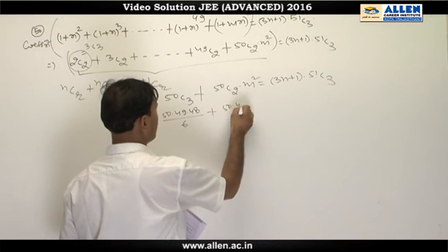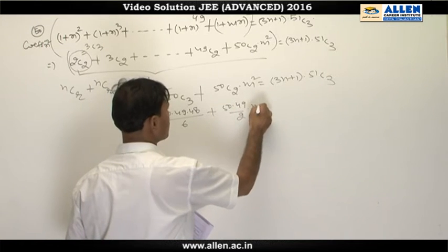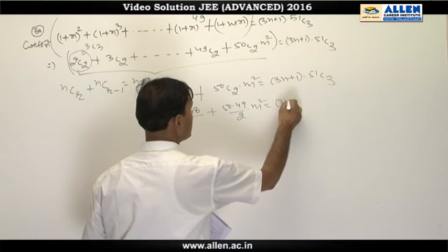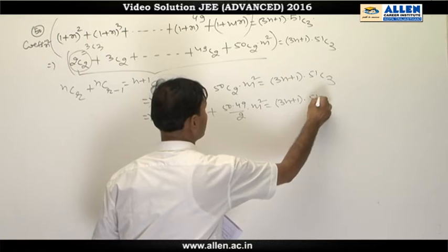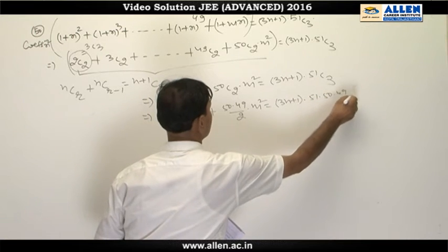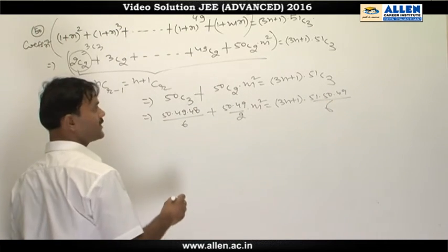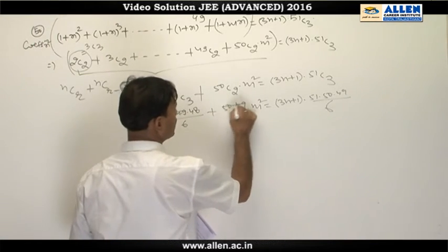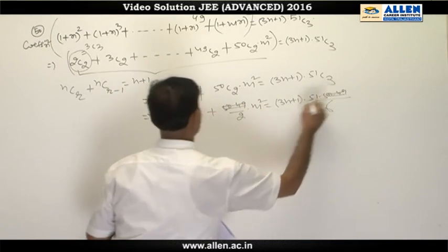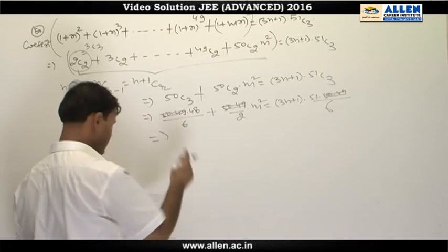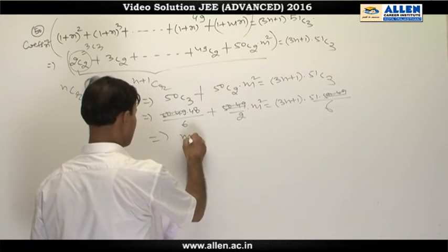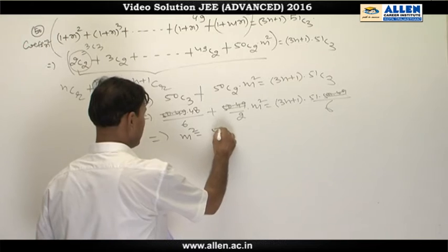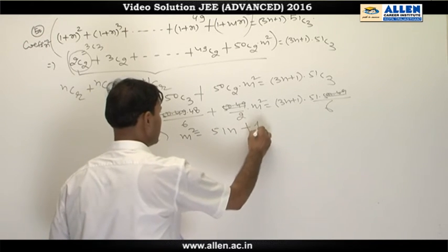plus 50·49/2 times m² equals (3n+1) multiplied by 51·50·49/6. We can cancel 50·49 on both sides and after simplifying this result we find m² equals 51n+1.